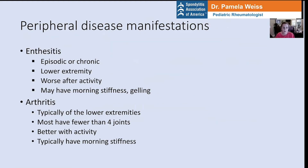As a reminder, when we talk about peripheral disease manifestations in juvenile spondyloarthritis, we're primarily referring to enthesitis and arthritis. Enthesitis is tenderness or inflammation where the tendons and ligaments attach to the bone. This is a process that occurs outside the joints, as opposed to arthritis, which refers to inflammation of the joint — an inside-the-joint process.